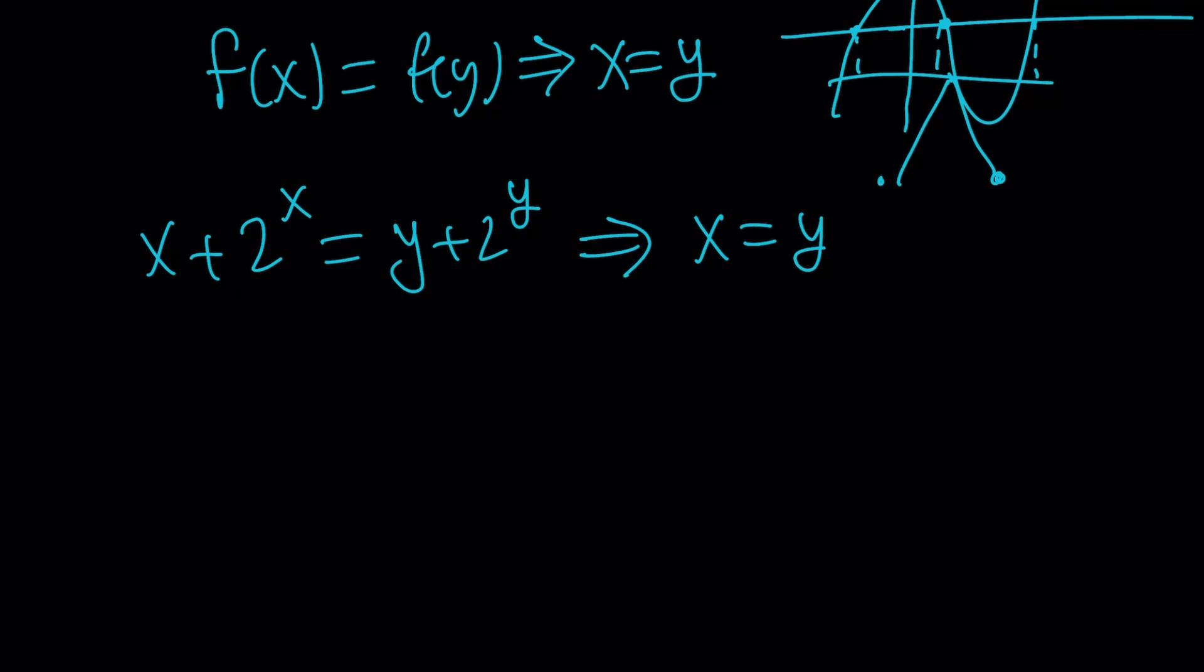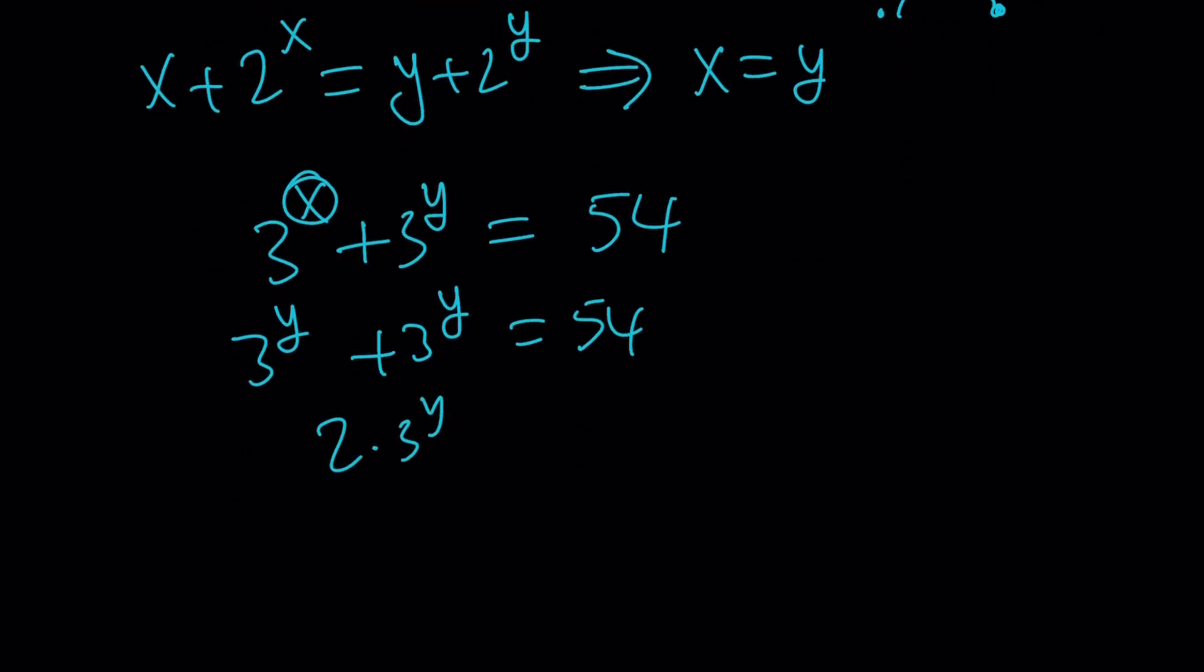So x = y. Now you have the second equation: 3^x + 3^y = 54. If you replace x with y, you get 3^y + 3^y = 54. This implies 2 × 3^y = 54, which means 3^y = 27 and y = 3. So once you know a linear relationship between x and y, the rest is fairly easy.